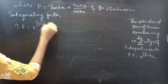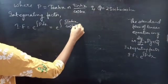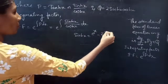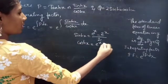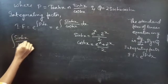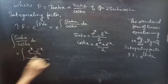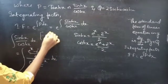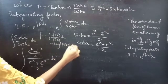We know that the integrating factor of a linear equation in y is given by e to the power of integral P dx. Using this formula, we will find the integrating factor: integral of tan Hx, or sin Hx by cos Hx, into dx. We know that sin Hx equals e power x minus e power minus x by 2.